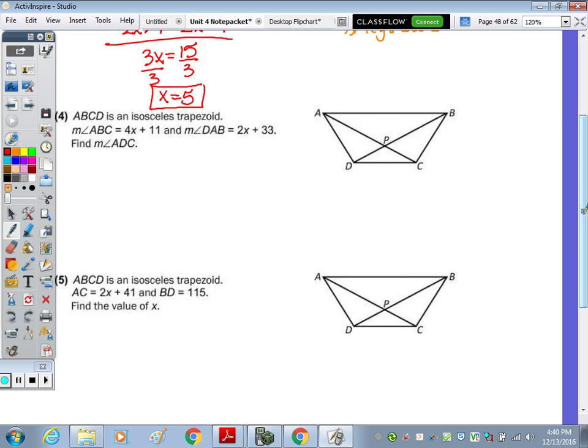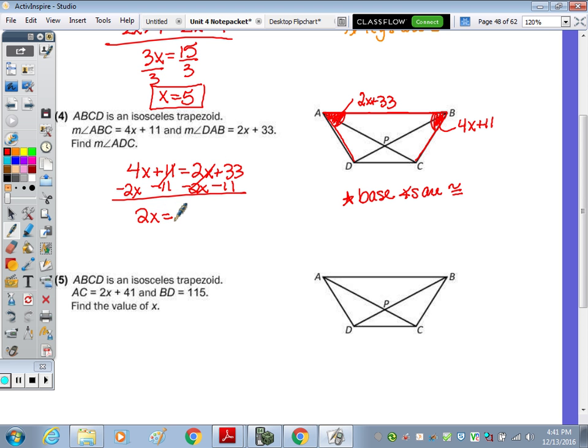Number 4. We have another isosceles trapezoid. This time we're looking at angle ABC. So in tracing, that's this angle right here. So that angle is equal to 4X plus 11. And then angle DAB would be this angle. Which is equal to 2X plus 33. Well, these angles are along base AB. And our base angles are congruent. So if they're congruent, we're going to set their measures equal. So 4X plus 11 equals 2X plus 33. I'm going to subtract the 11 from both sides. Subtract the 2X. And we end up with 2X equals 22. Divide by 2. And X equals 11.